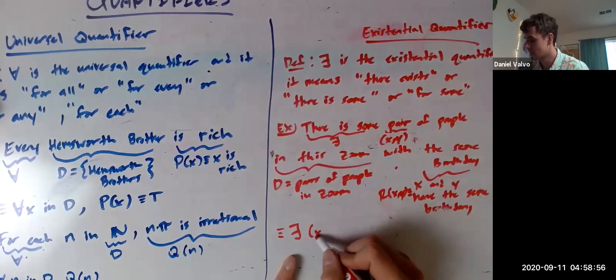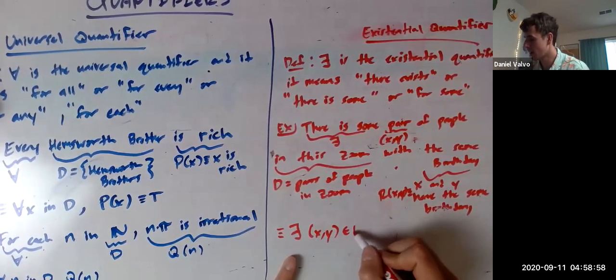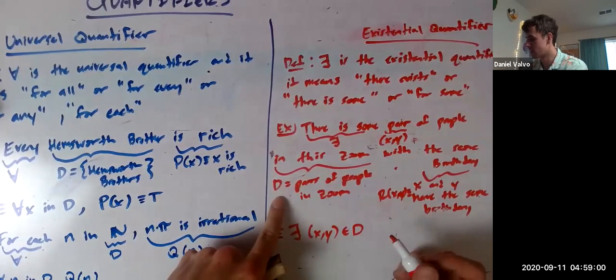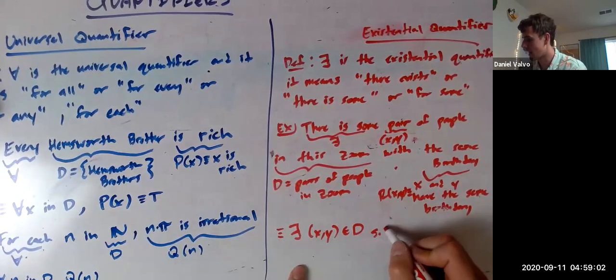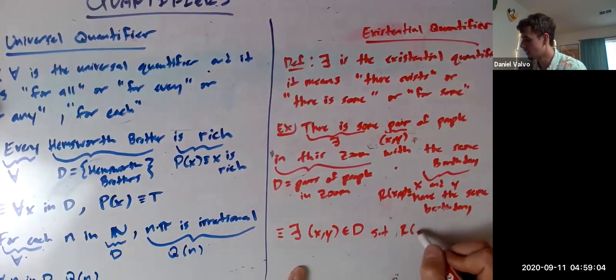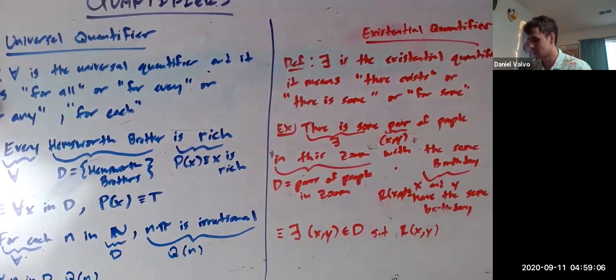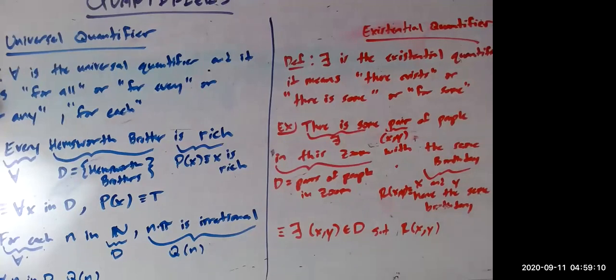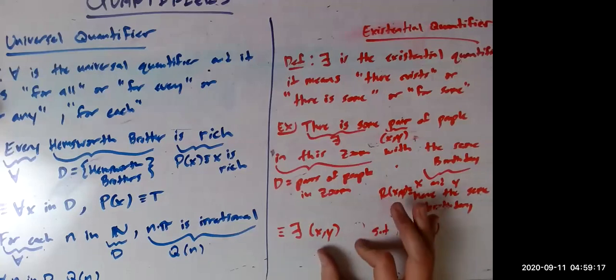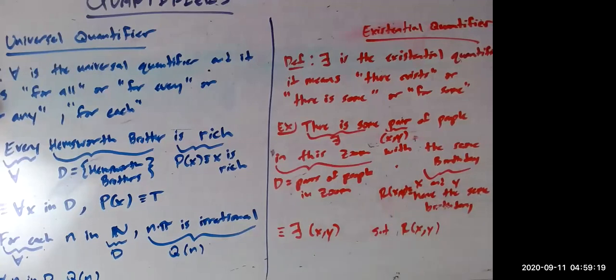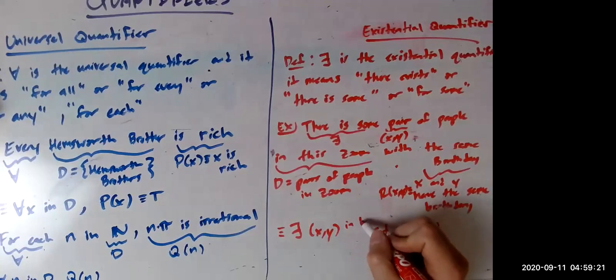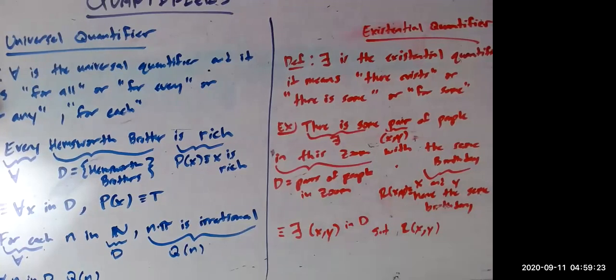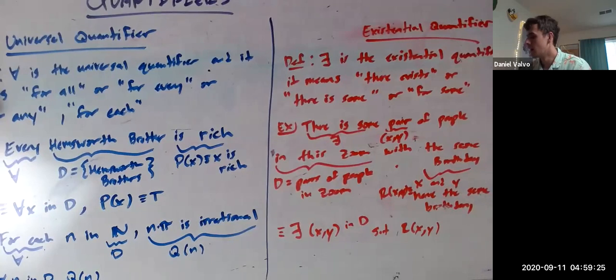And so how can we write this sentence in our more math notation where we say, well, there exists a pair in the pairs of people in Zoom such that R of X, Y is true. Those are the same birth name. Is there any notation or verbiage for when the order of the pairs or the variables don't matter? Because previously we said if we have a pair, sometimes they do matter. And then in this case, it doesn't.